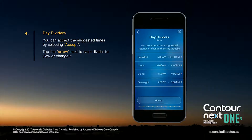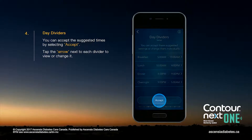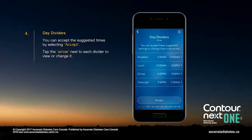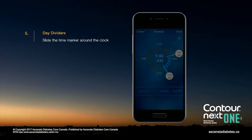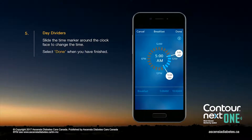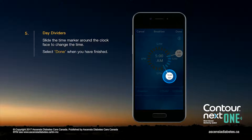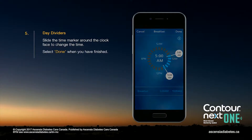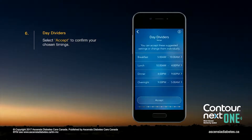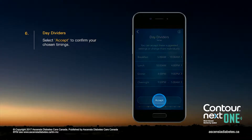You can accept the suggested times by selecting Accept, or tap the arrow next to each divider to view or change it. Slide the time marker around the clock face to change the time. Select Done when you have finished. Select Accept to confirm your chosen timings.